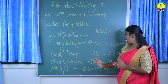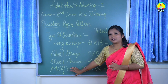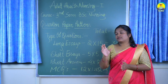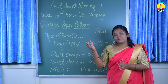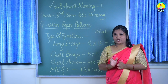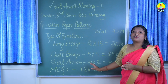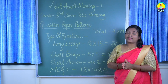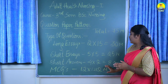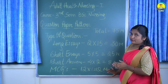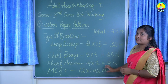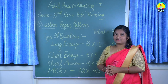The last part of the question paper is MCQs, meaning multiple choice questions. In this section, they ask questions in the form of fill in the blanks with 4 options provided below each question. We have 12 such questions and each question carries 1 mark, totaling 12 marks in this part. The entire paper carries 75 marks. This is the question paper pattern of Adult Health Nursing first.